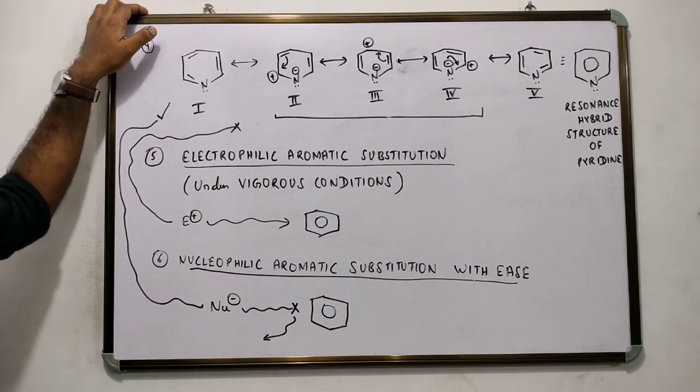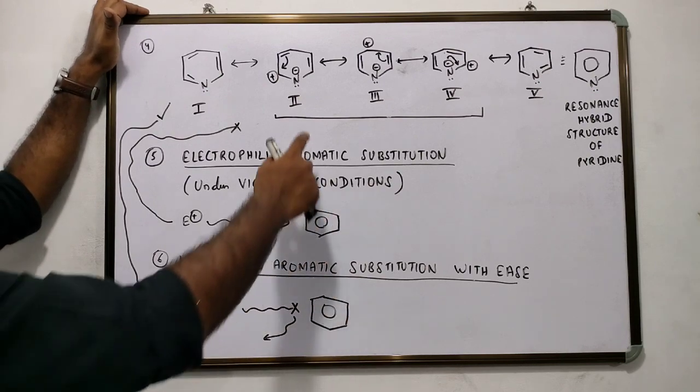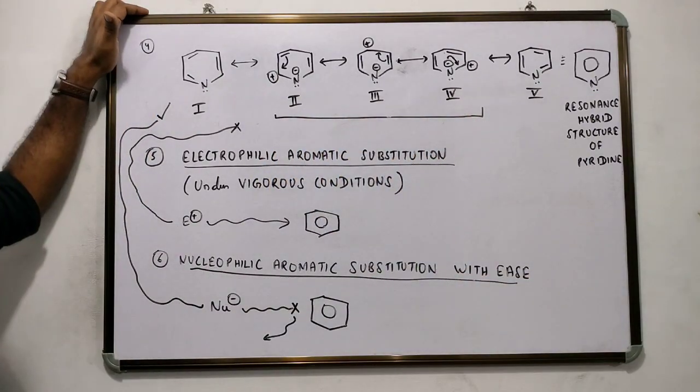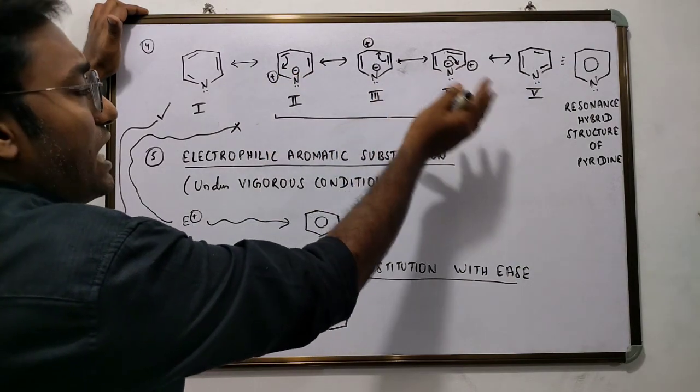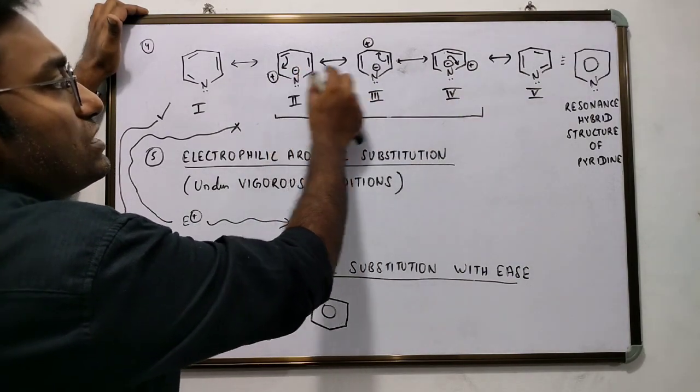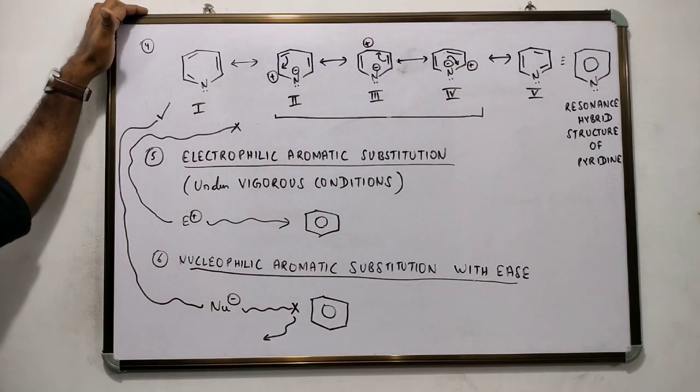But why is it so? Why is it that pyridine spends less time as ionic resonating forms? If we introspect structure 2, 3, and 4, the ionic structures, we would notice that there is charge separation in these structures.